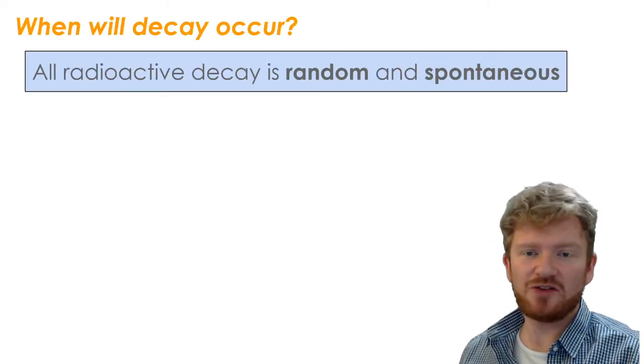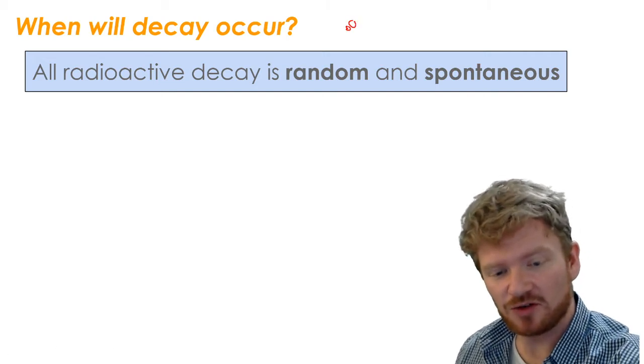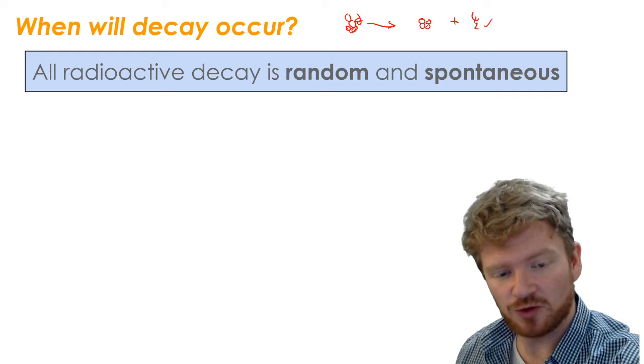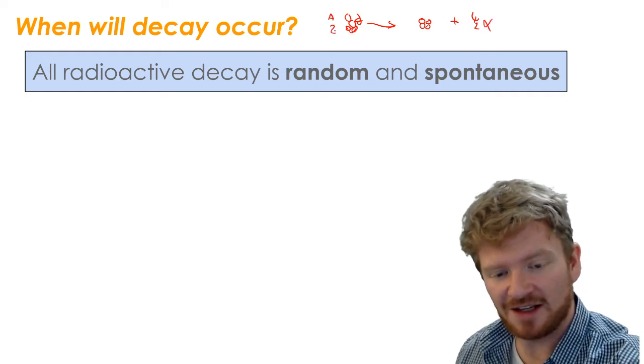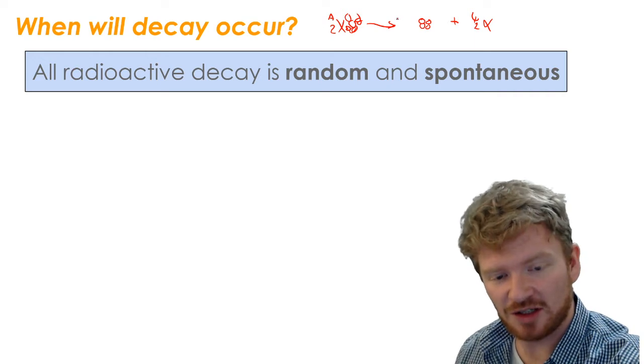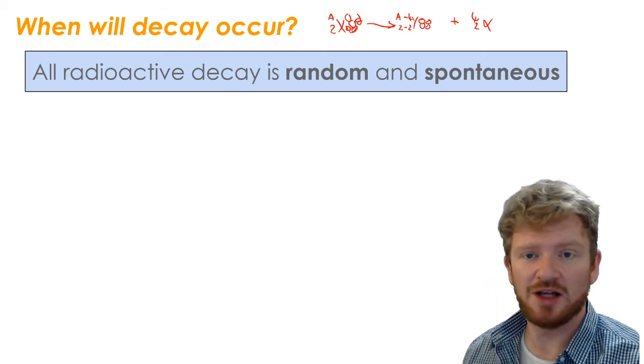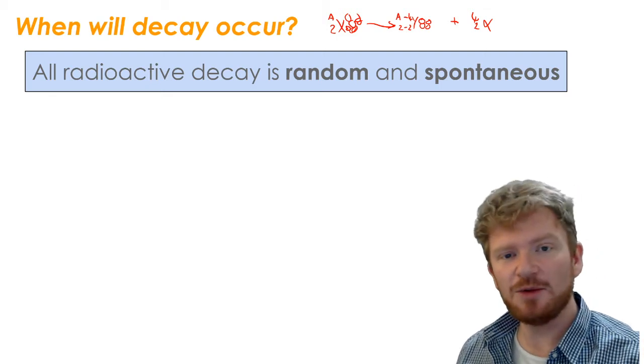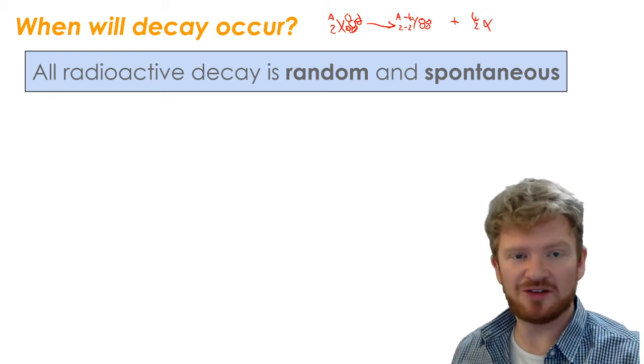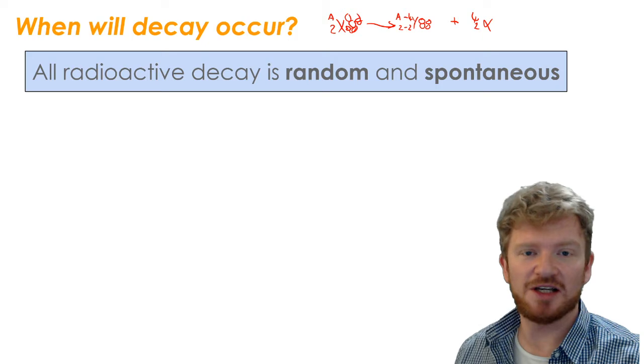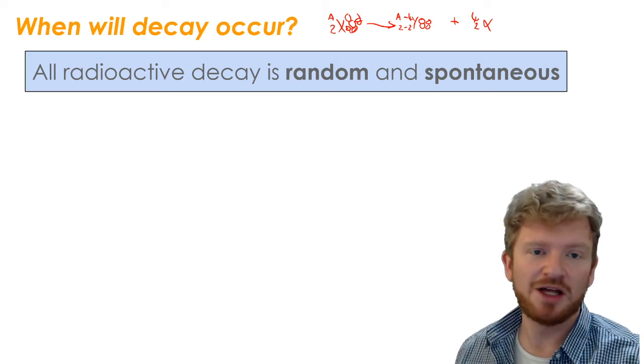So let's think about a nucleus. Here's a nucleus, and we know that it's an alpha emitter, so it's going to decay into its daughter nucleus plus a 4,2 alpha. We might write that as A,Z,X, and that's going to turn into A minus 4, Z minus 2, Y daughter nucleus. So is there any way of knowing when it's going to decay? That turns out to be a relatively complicated question. A key thing that you need to know for CIE is that all radioactive decay is random and spontaneous.